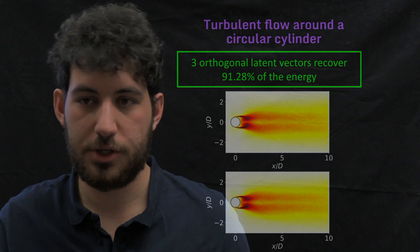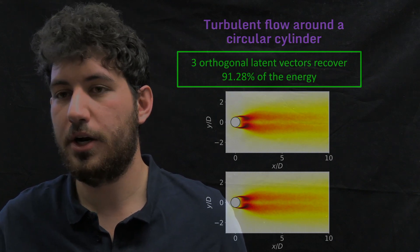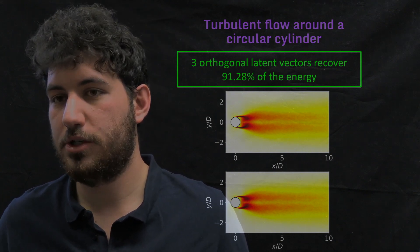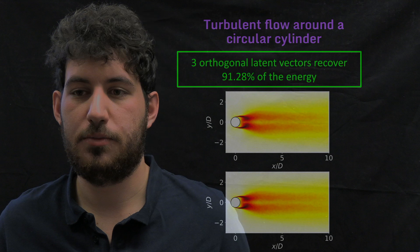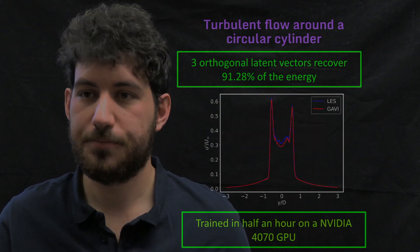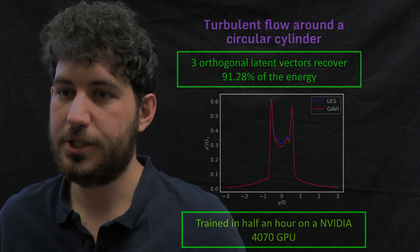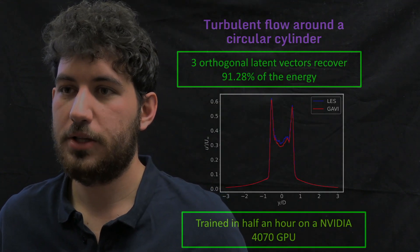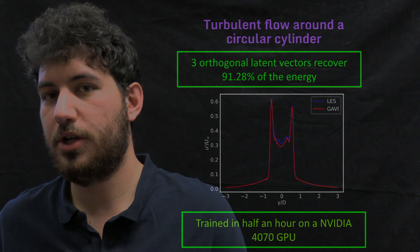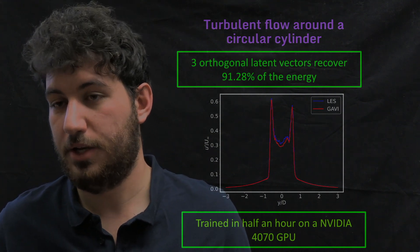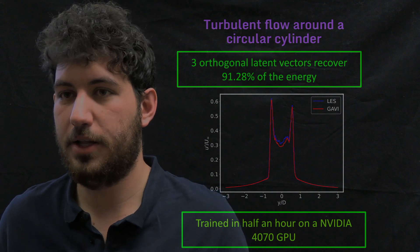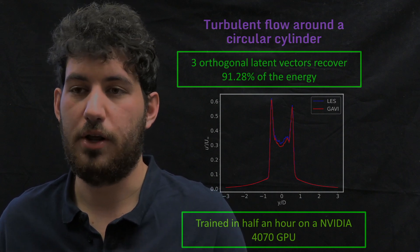And it's a cross streamline that actually goes over the two shear layers of the cylinder. So we are actually capturing the regions of the cylinder where there's more turbulent kinetic energy production. We see here in this plot that the GAVI reconstructed flow field matches perfectly the LES data in most points of the domain, and the deviation is actually really, really small.